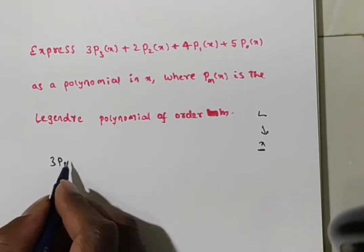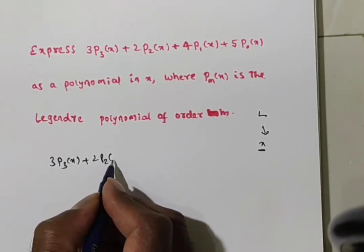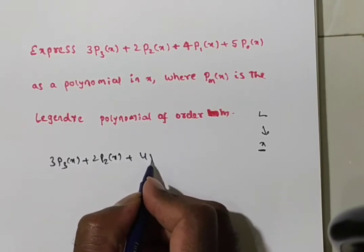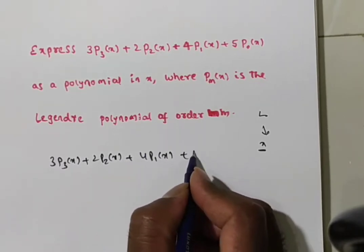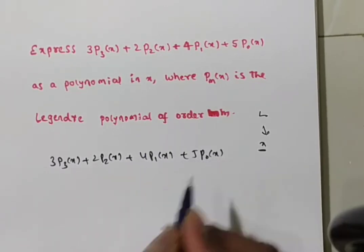So first you write down the given polynomial: 3P₃(x) + 2P₂(x) + 4P₁(x) + 5P₀(x).